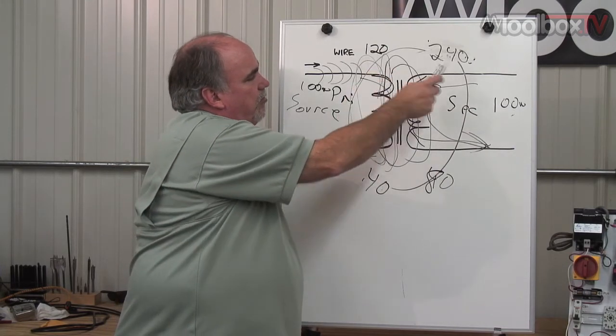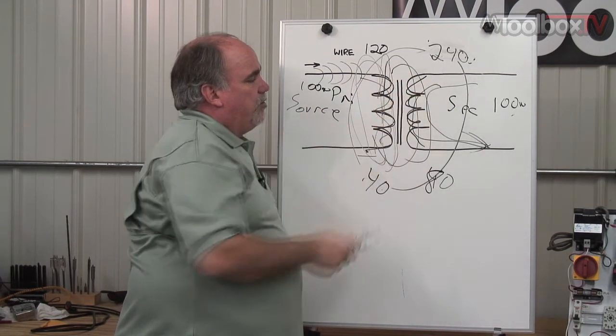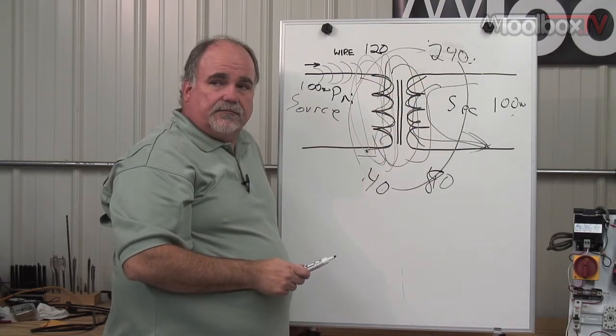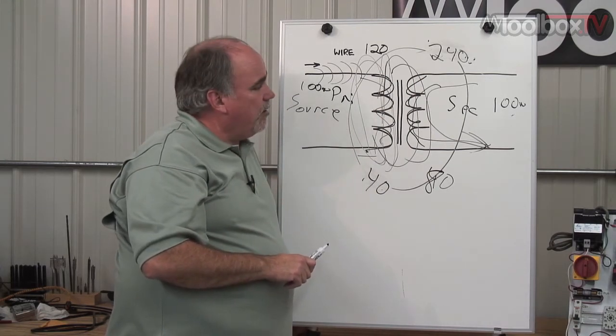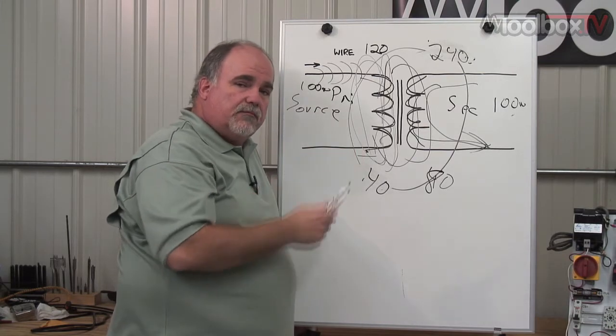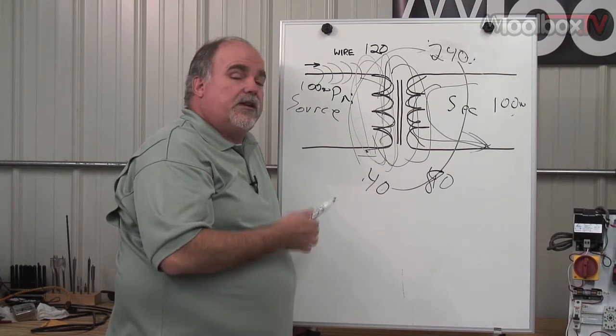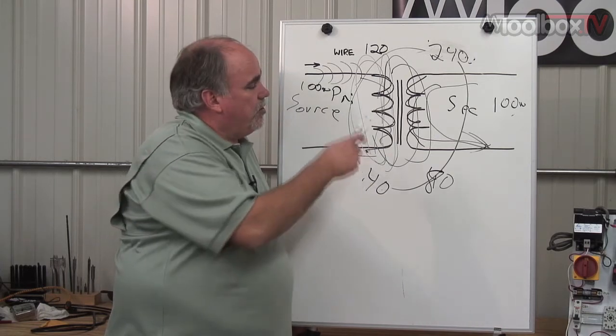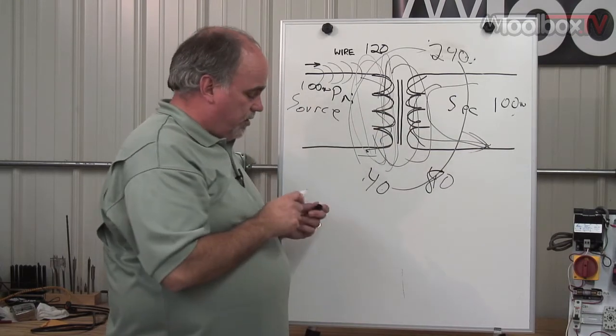And what that means is, if you step up the voltage, in this last example, if you double the voltage, you've cut the current in half. So as you step up voltage, current drops by the same amount. Same thing if you step down voltage, current goes up by the same amount. And that is the reason we use transformers. Because you can change the voltage, and the power doesn't change except for some small losses.